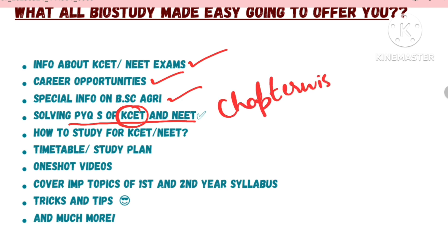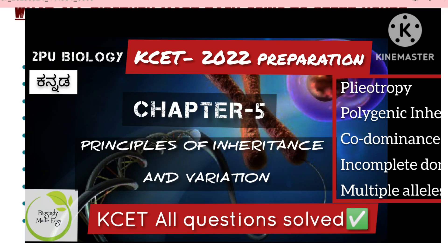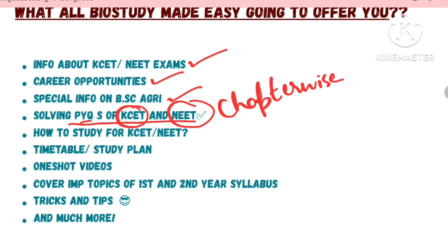I think very few chapters remain — I will solve those. Topics include reproductive health, human reproduction chapter, and then the genetics chapter. All those chapters are very, very important. So if you want to solve with explanation, you will get a clear idea, and we are doing previous year question paper solving as well.